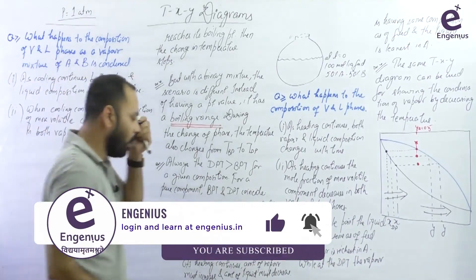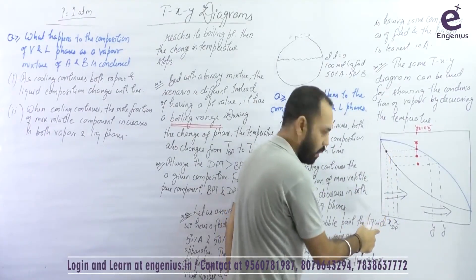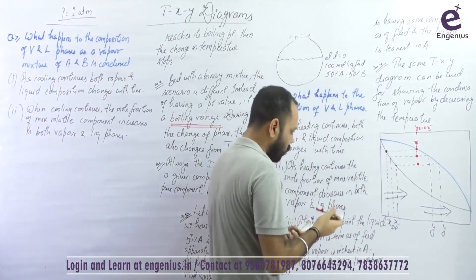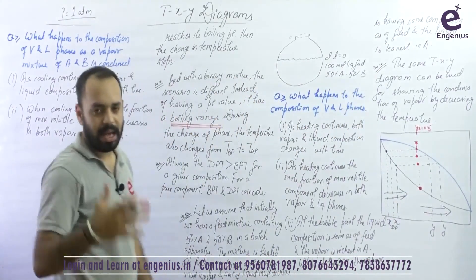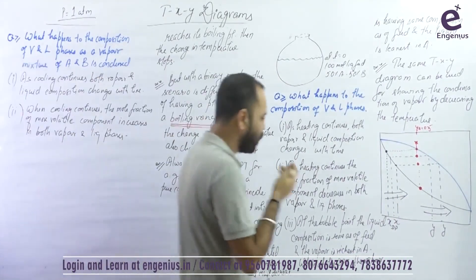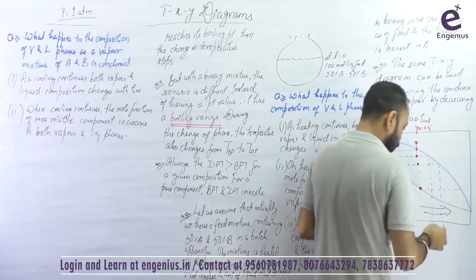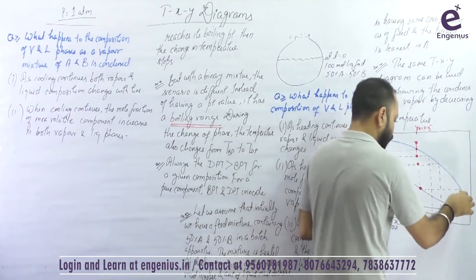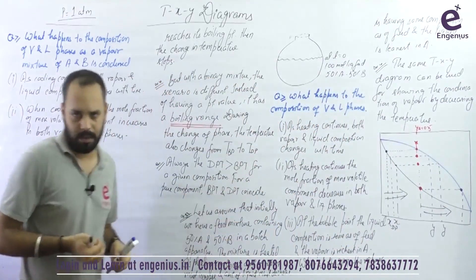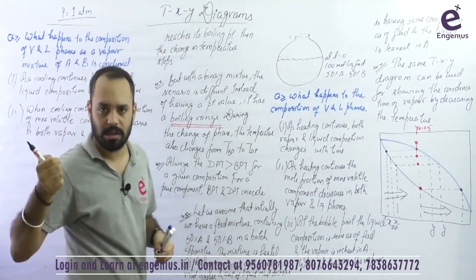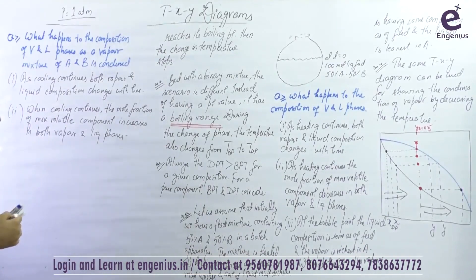The first drop of liquid which is formed is leanest in A. As you further cool it down, you reach the bubble point. At the bubble point, almost the entire vapor has been condensed, and the corresponding small amount of vapor left is having the highest possible composition of A. So just opposite things are happening — the path has been reversed. Earlier I was heating, now I am cooling.